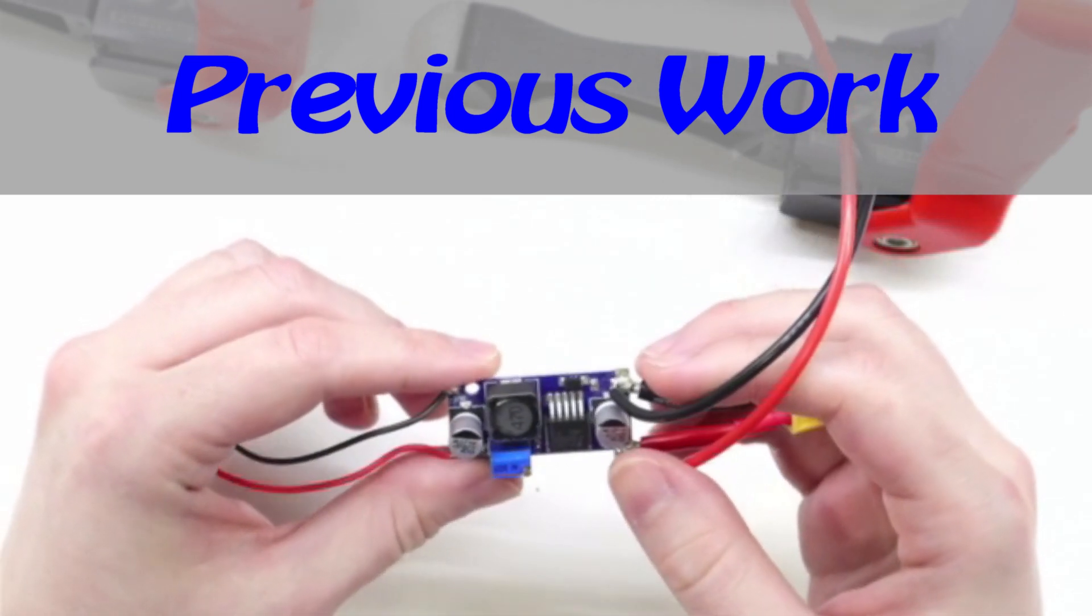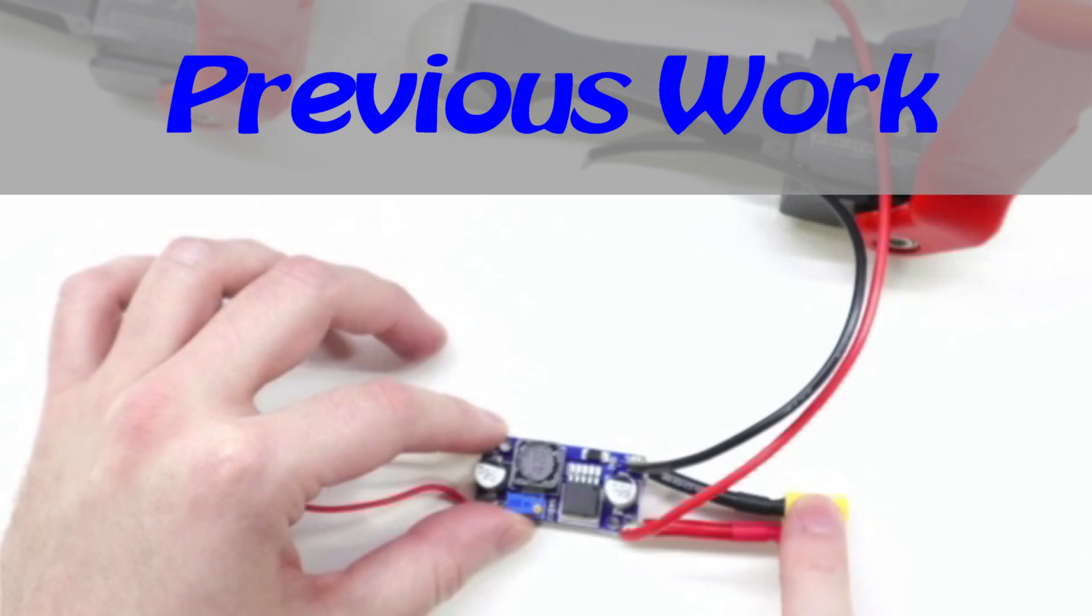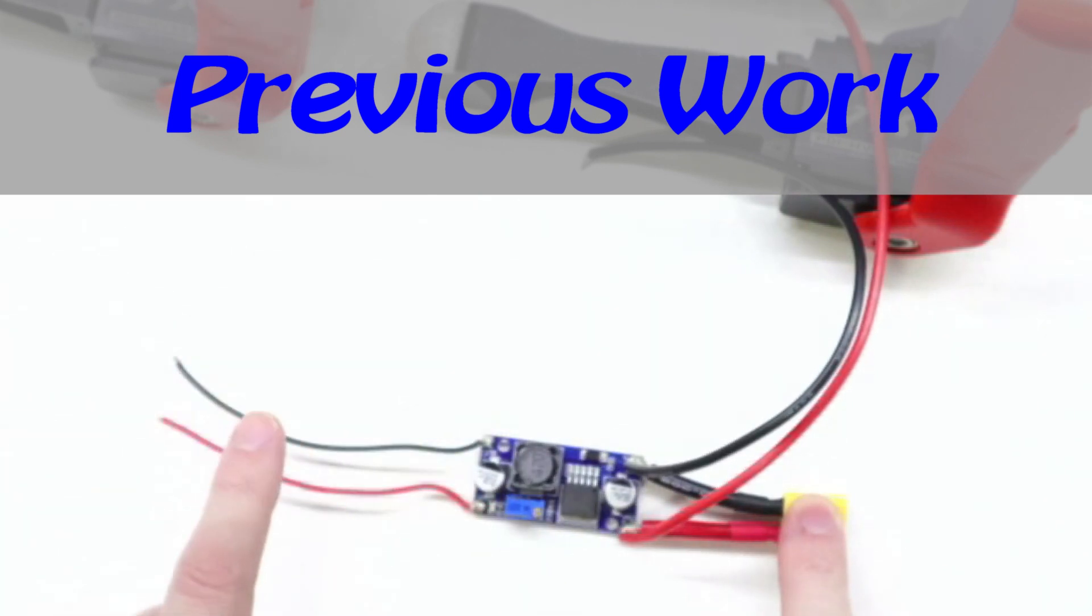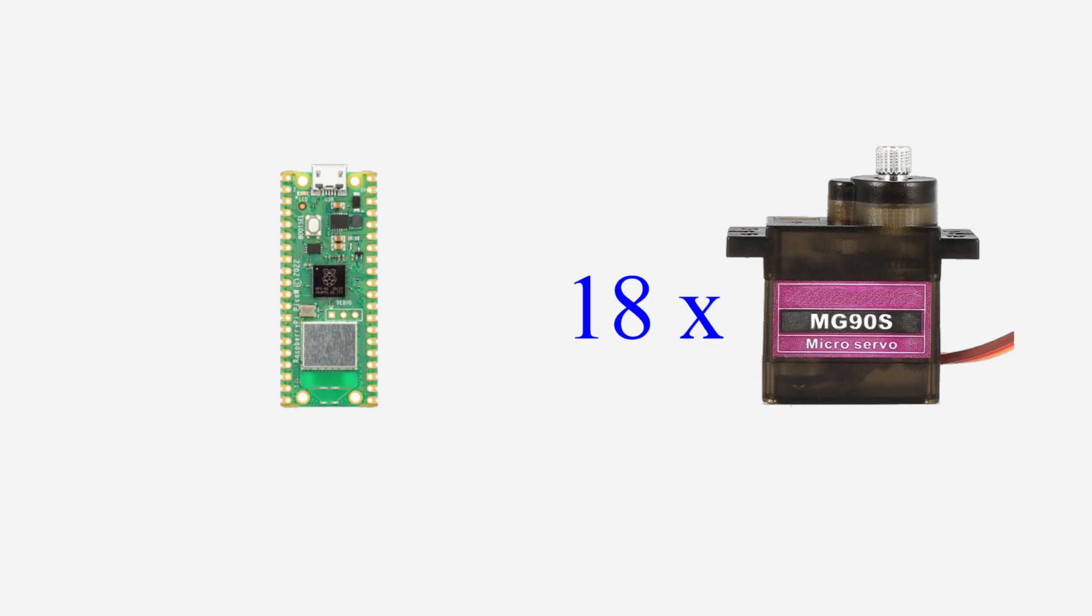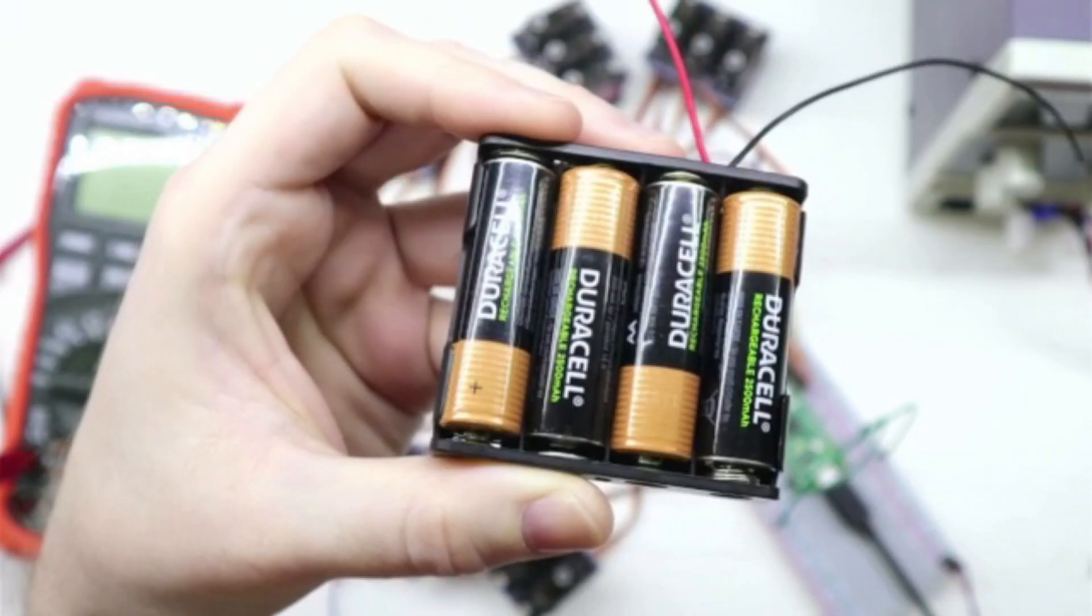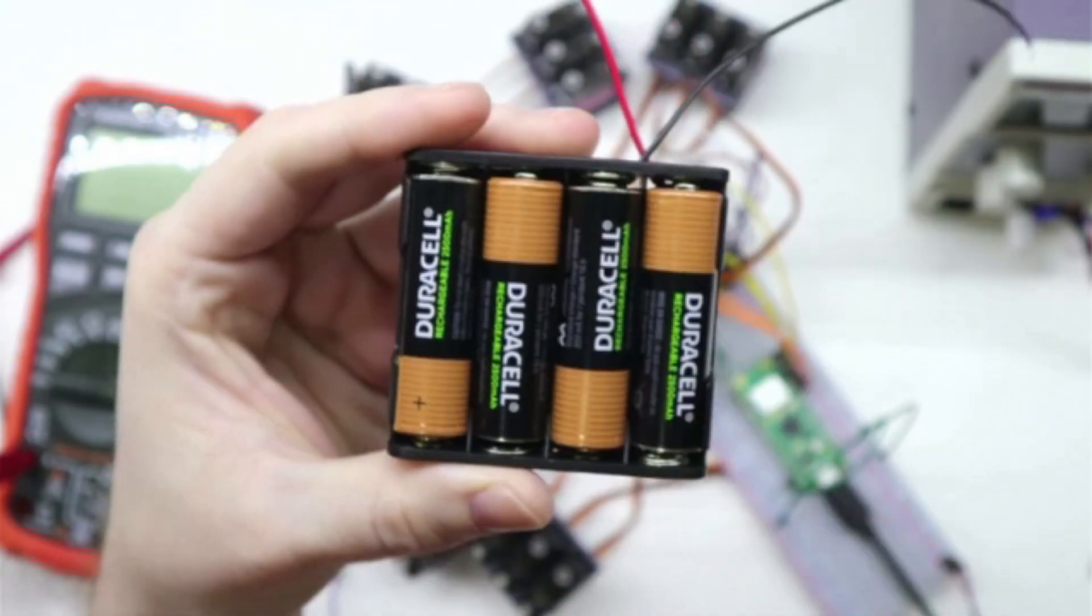In my previous spot micro build I used a two cell LiPo battery with a buck converter to provide 5 volts to the Raspberry Pi and the servos could then just run directly off the 7.4 volts from the battery. This time I'm using micro servos and a Pi Pico. I want to get everything running off 5 volts. I should be able to get 5 volts from four AA batteries, which would be nice because then I wouldn't need any extra electronics.